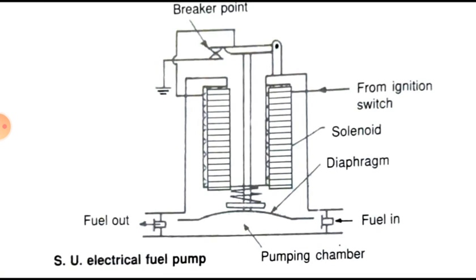The breaker point allows current to pass through the diaphragm. When current passes through, it creates a magnetic current which then passes through the system.